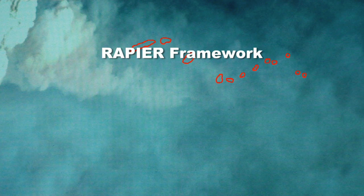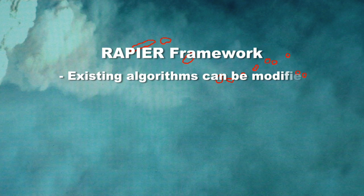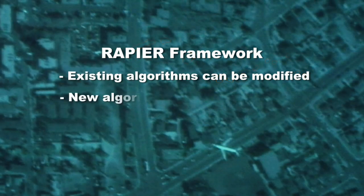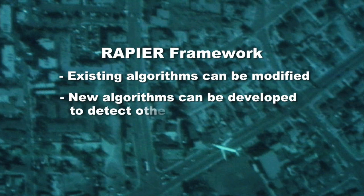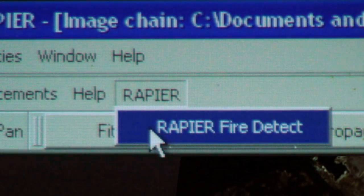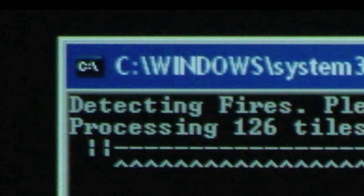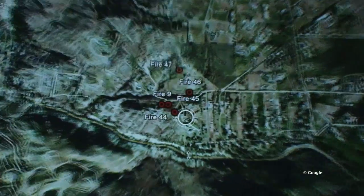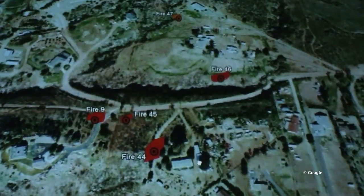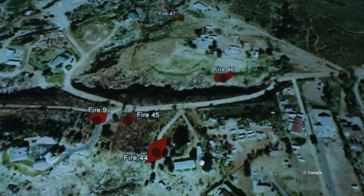Within the Rapier Framework, existing algorithms can be modified to better suit the needs of the user, and new algorithms can be developed to detect other targets of interest. Using the Rapier Fire Detection System provides the image analyst a very quick, easy, and accurate way to locate wildfires in high-resolution satellite imagery, thus providing better situational awareness during disasters.